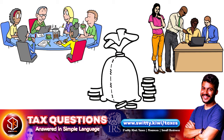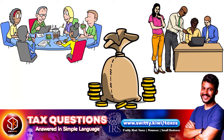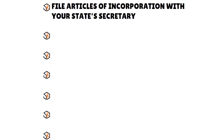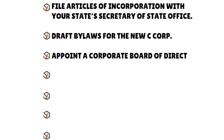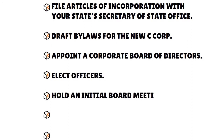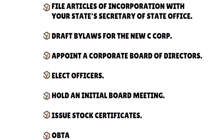What do you need to do to convert your ALC to a C-Corporation? You must follow several steps. No matter how you convert, you will need to file articles of incorporation with your state's Secretary of State office — every state has different rules. After filing, you need to draft bylaws for the new C-Corporation, appoint a corporate board of directors, elect officers, hold an initial board meeting, issue stock certificates, and obtain a new EIN.